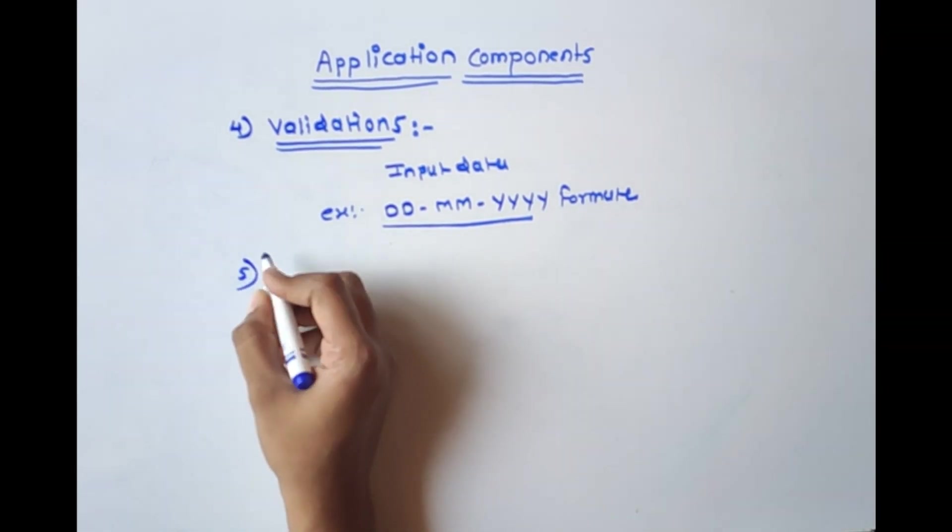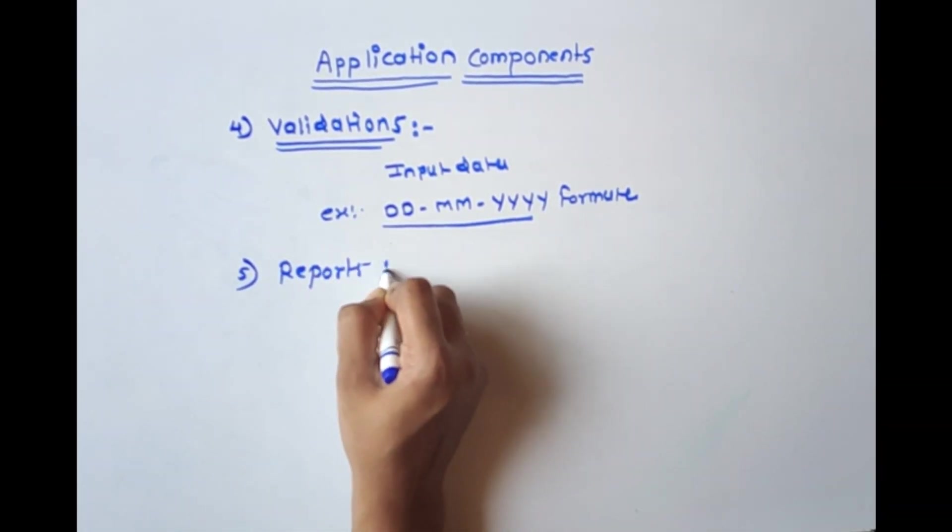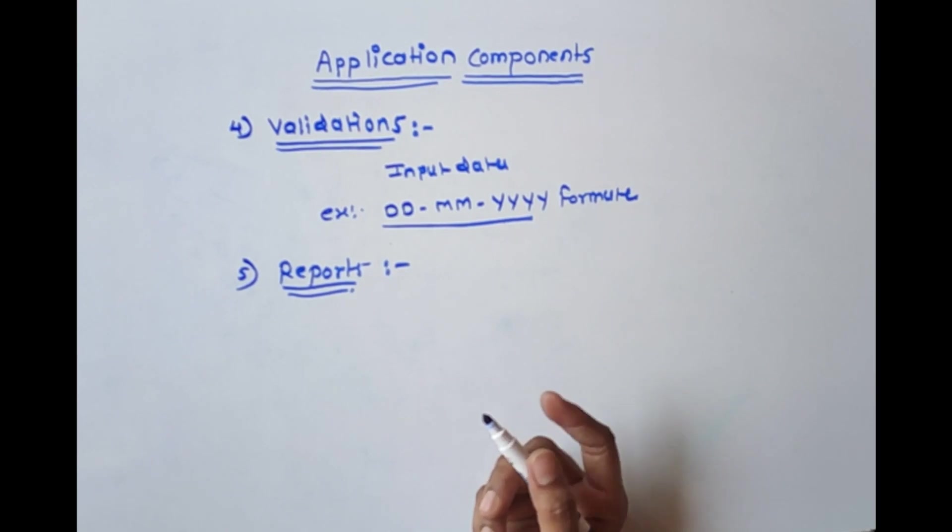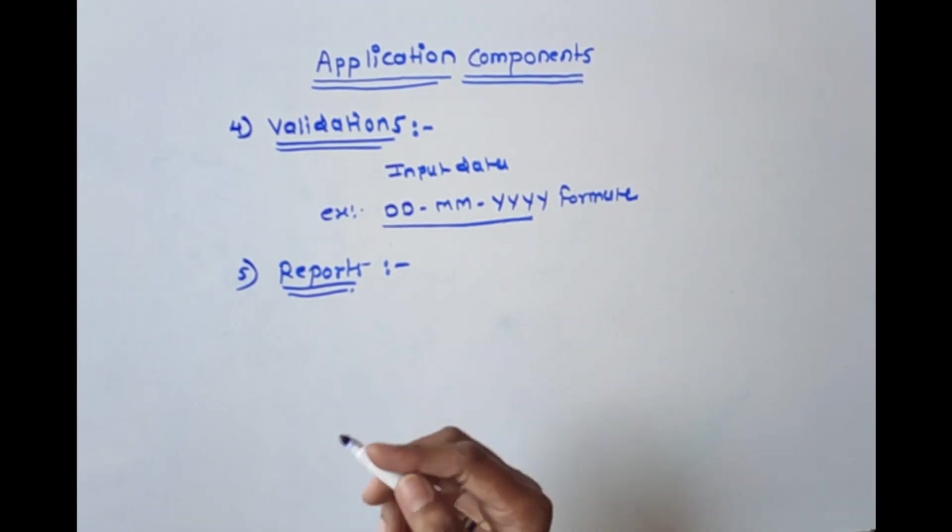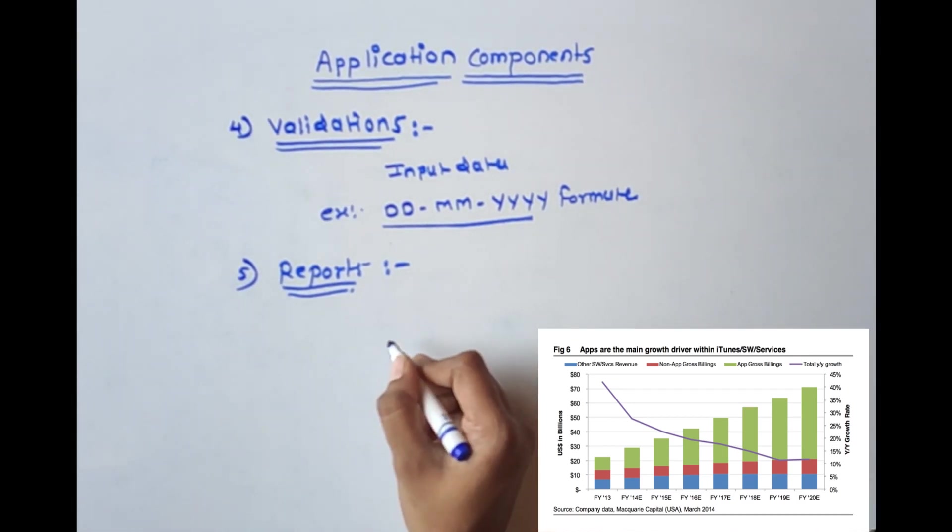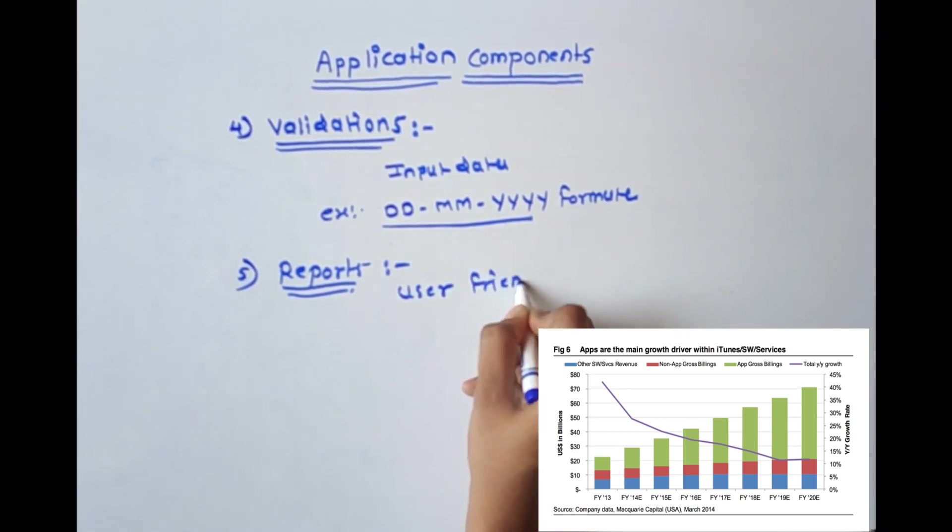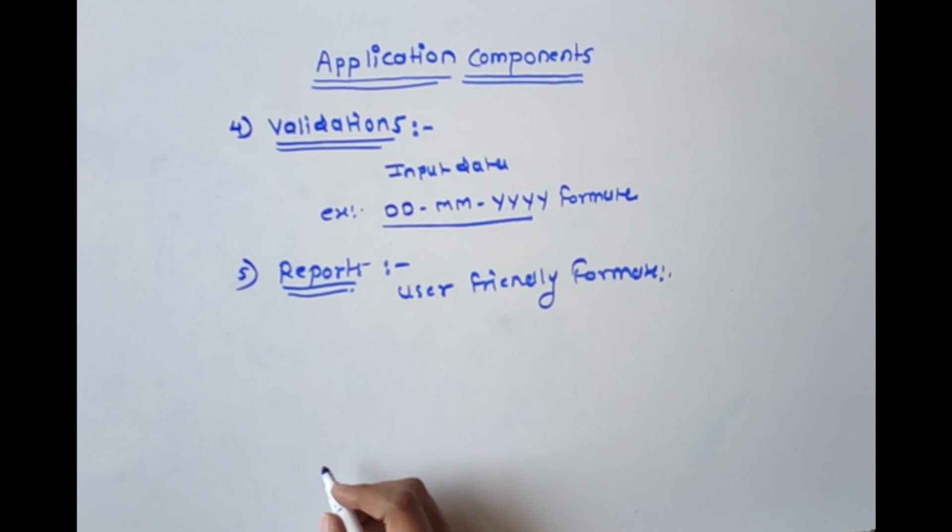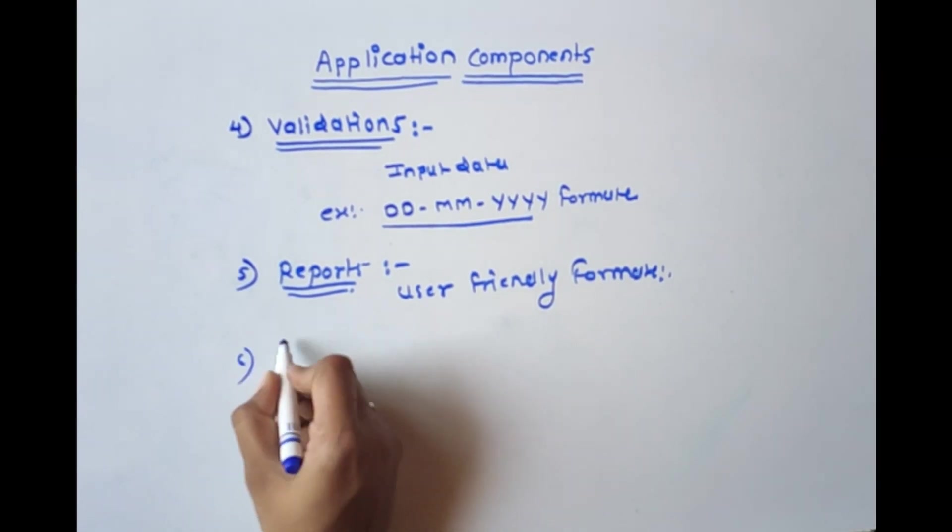Fifth one is reports. Reports is nothing but history about the user transaction as per user concern form. Means consolidated information as per user needs displayed in user friendly format. For example, details of new employees joining in the current month, then number of new employees in each department, then number of employees in particular department and many more.